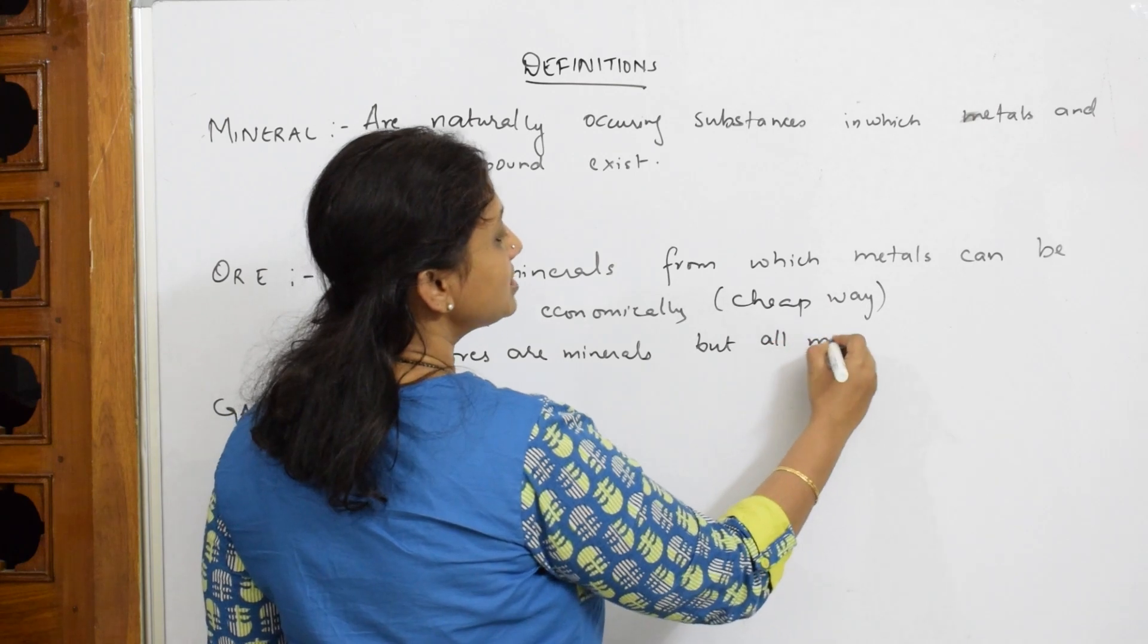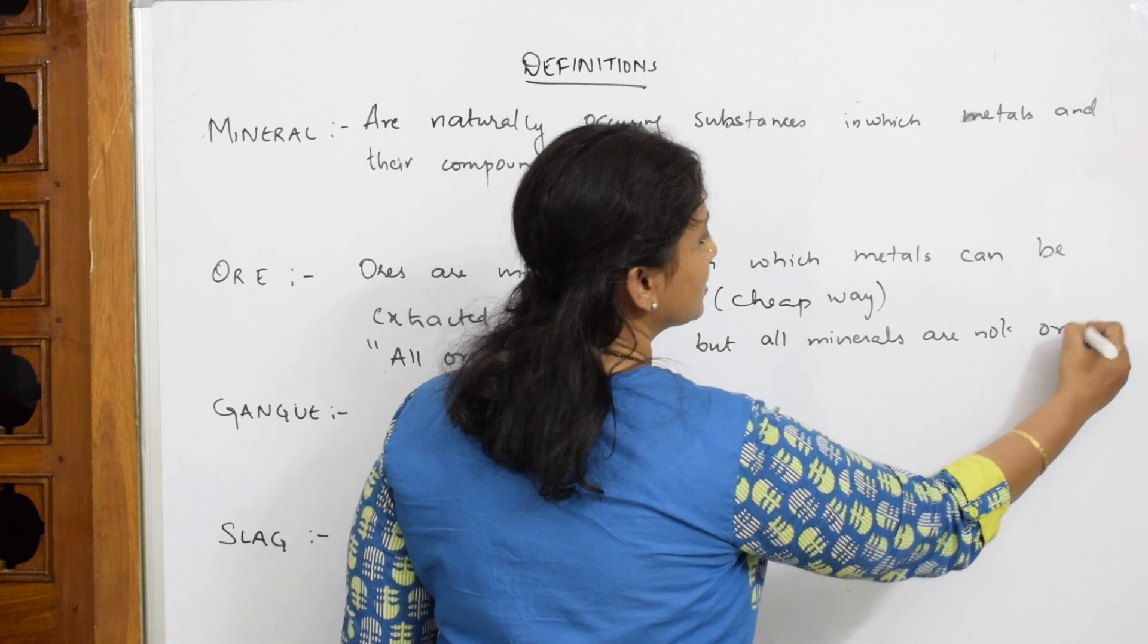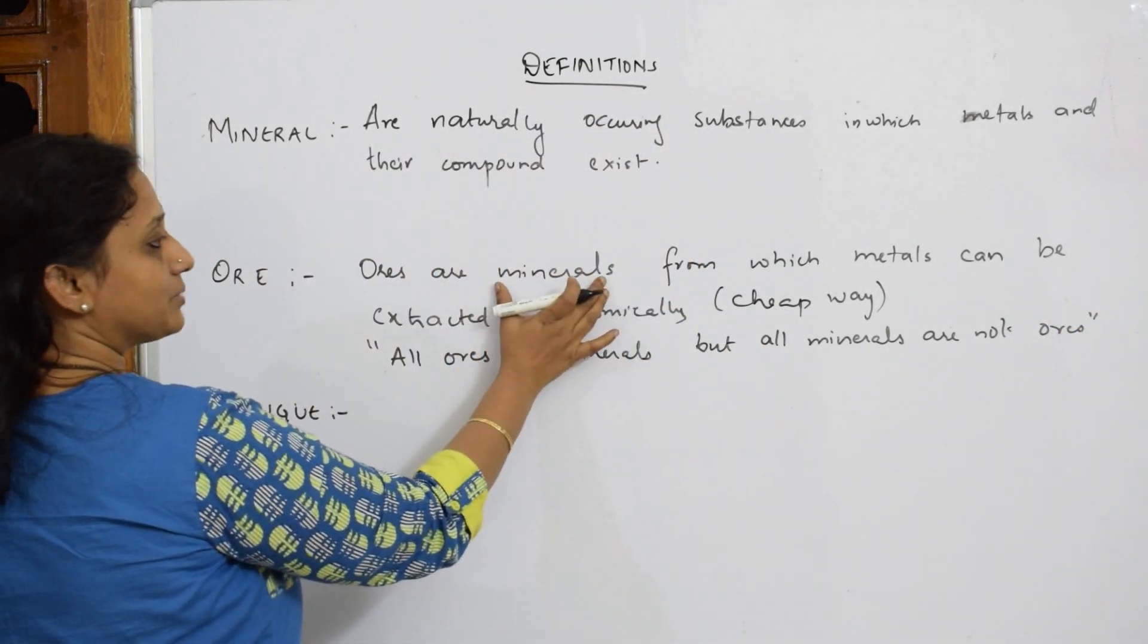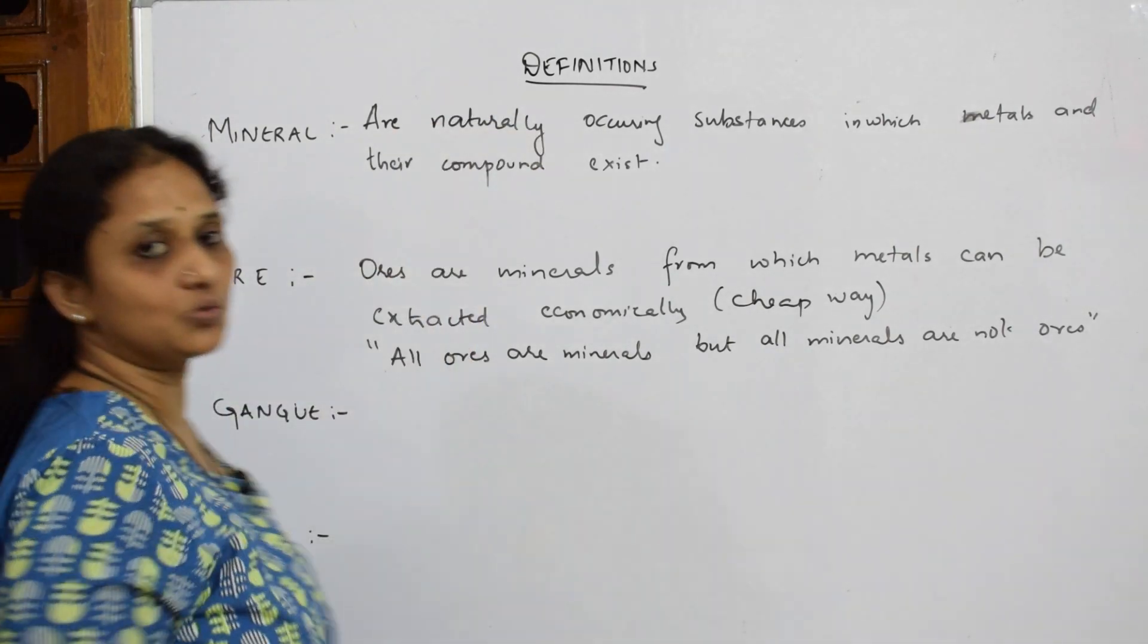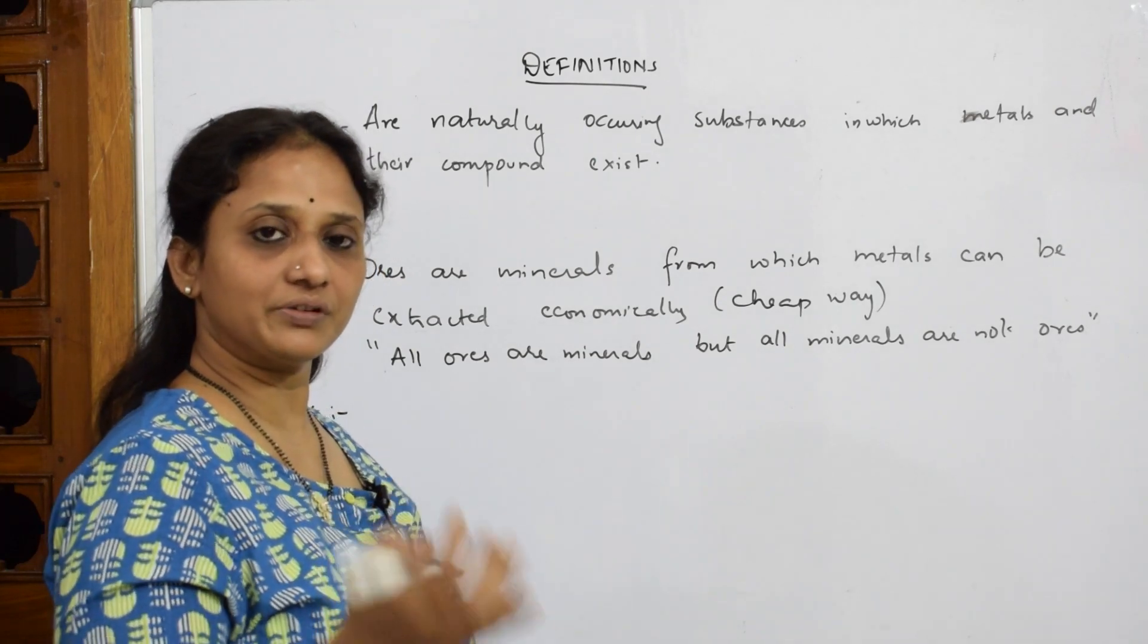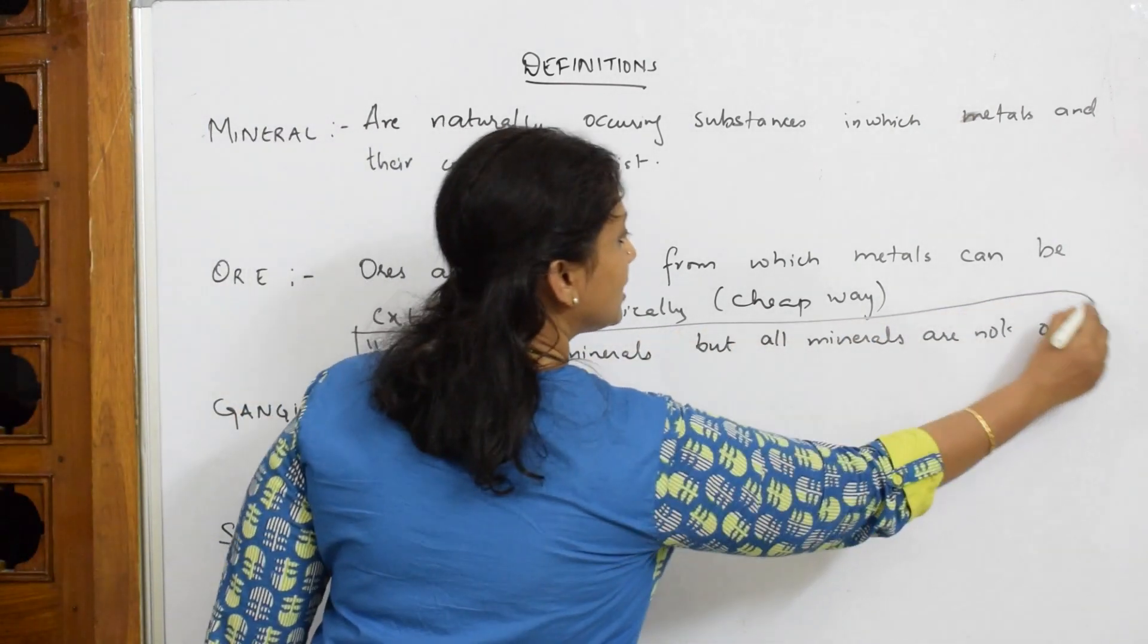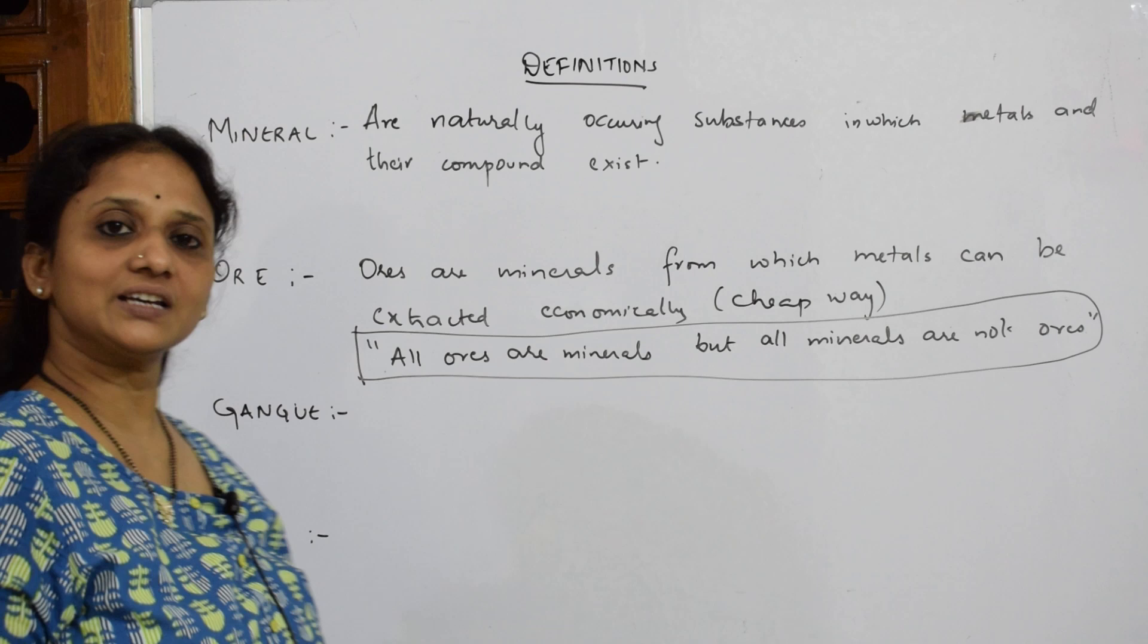All minerals are not ores. This is what you have to remember. Ores are minerals from which I can extract metals, but all minerals are not ores. I can't generalize it, as not all contain the particular ore from which I can extract the metal. Remember this line - this is what they would ask you. You can justify this answer by writing these definitions.